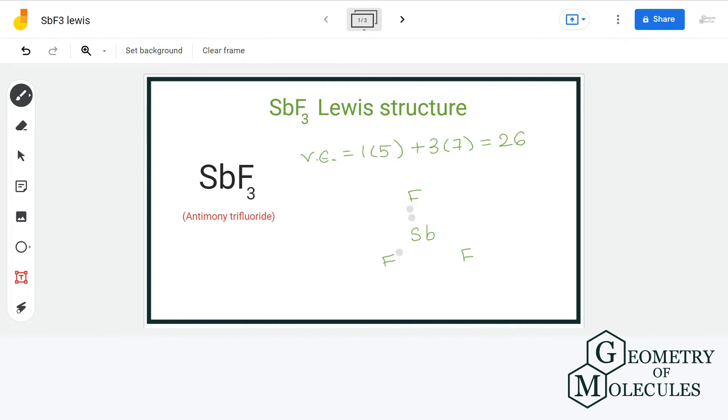Then we will place electron pairs for bond formation. As you can see, each fluorine atom needs 6 more electrons for complete outer shell, so we will assign 6 electrons to each fluorine atom.